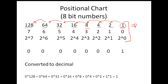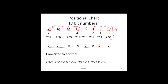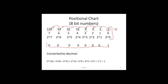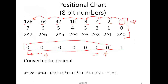Let us apply this positional notation chart to converting the 8-bit number 00000001. As we learned before, 0 times anything always equals 0, so we do not need to bother figuring out the sum of the first 7 bits — they will all equal 0. The digit with a value of 1 multiplied by its positional weight of 1 equals 1. So this octet represents decimal 1.